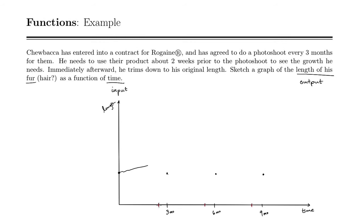Right when we hit the point where he starts using Rogaine, his hair slowly grows, and then once he starts taking Rogaine it's going to kind of take off — growing a lot faster until his photoshoot. And then he trims. This cycle repeats.